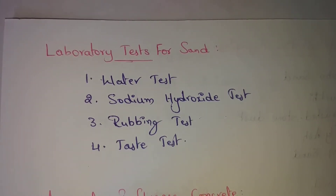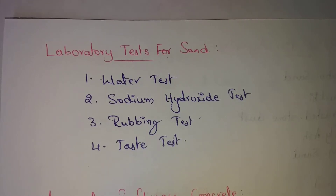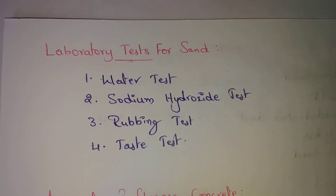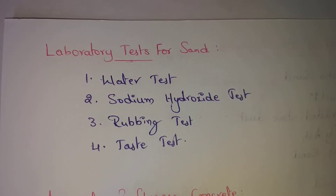The third test is the rubbing test. In this test, simply take some sand and rub it between two fingers. By rubbing the sand between the fingers, we can easily identify certain properties of the sand. We can find out characteristics through this simple rubbing method.